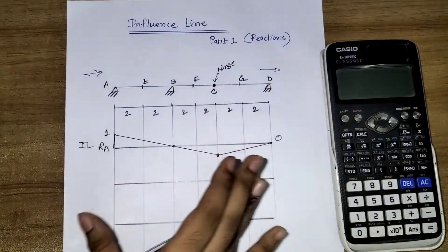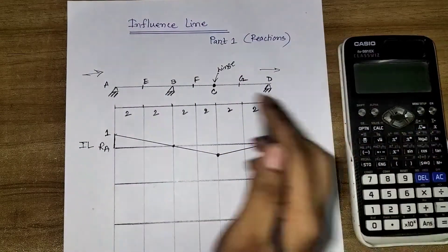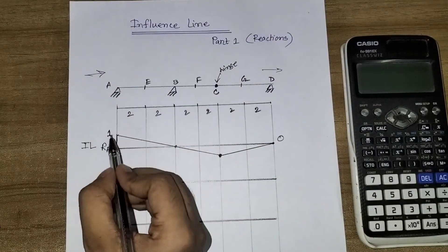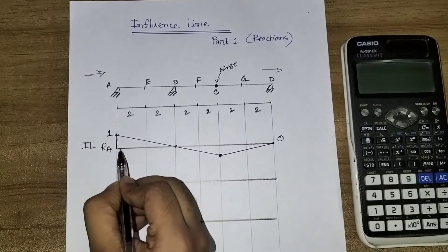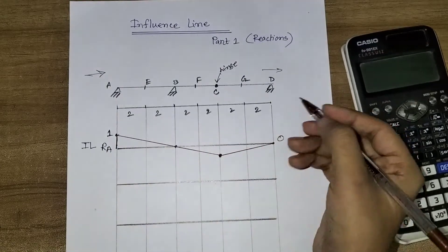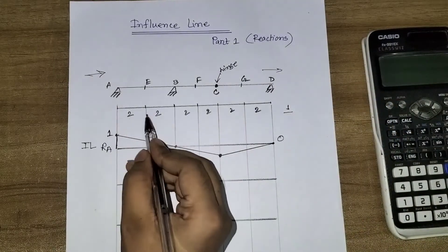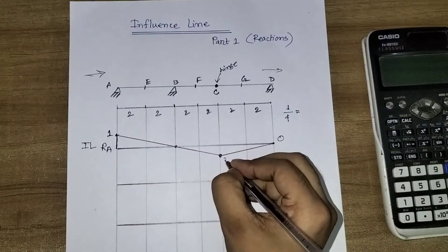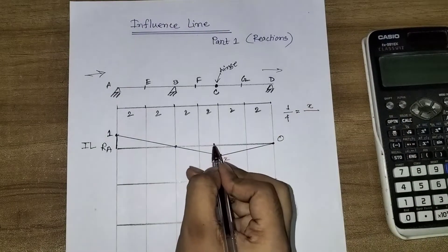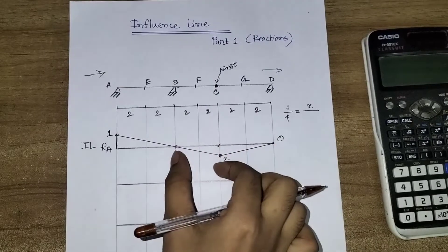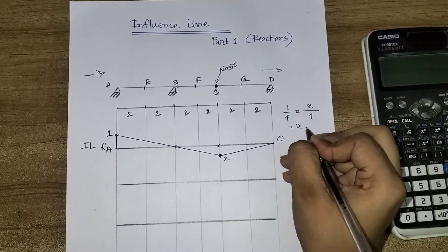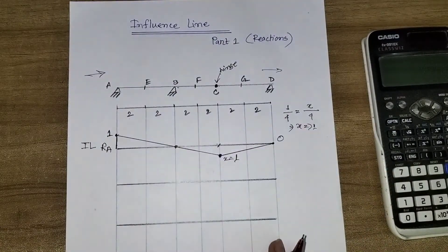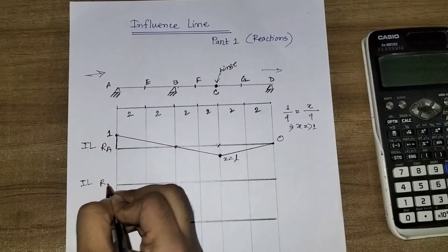So if this is one, then what will be the ordinate at this point? I will solve this by similar triangle. Let me calculate the total distance here: one unit load and the distance is two plus two equals four. So I can write one by four is equal to this point, let me call it X, divided by the distance from B to C. B to C is also four, so X will also be one.